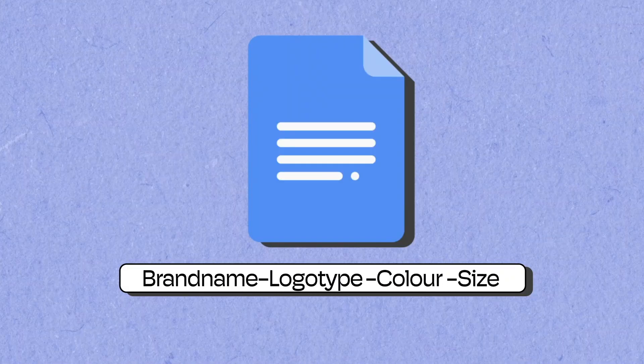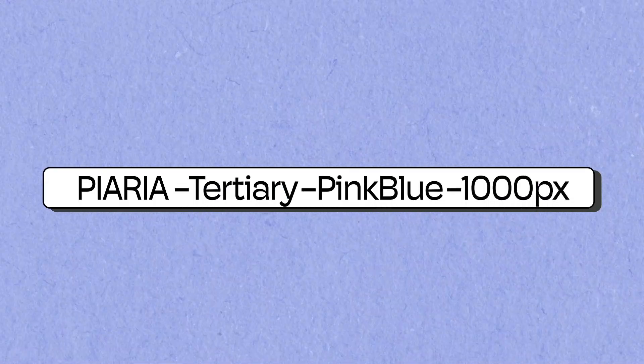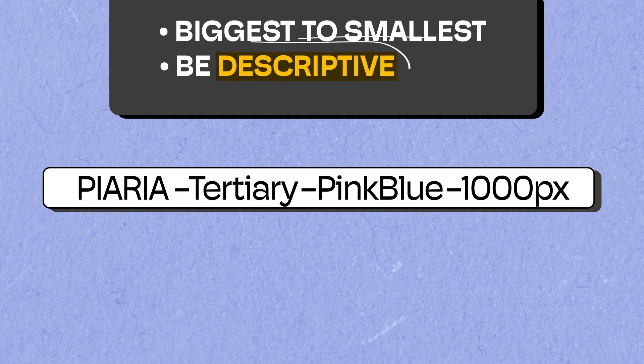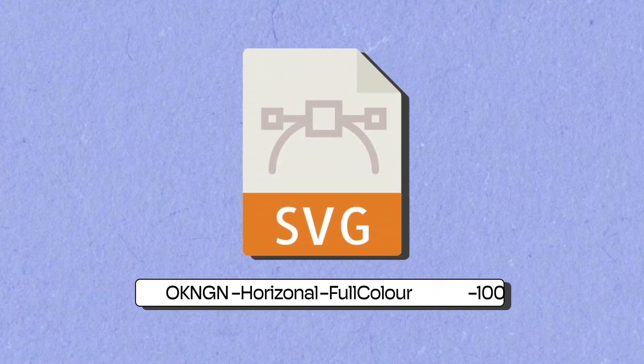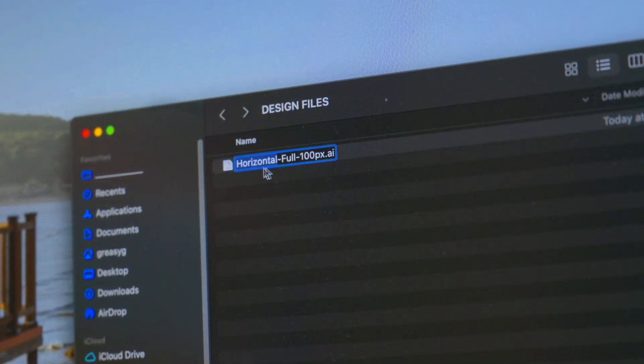My logos are named like this: brand name, logo type, color, size. In terms of information hierarchy, it's biggest to smallest. It might be something like: brand name, tertiary, pink-blue, 1000px. Or Okanagan, horizontal, full color, 100px. Or if there is no size because it's a vector image: Okanagan, horizontal, full color. I like to use dashes. The reason I use dashes instead of underscores is because I can quickly double click a word without highlighting other words, making it easier to change file names.